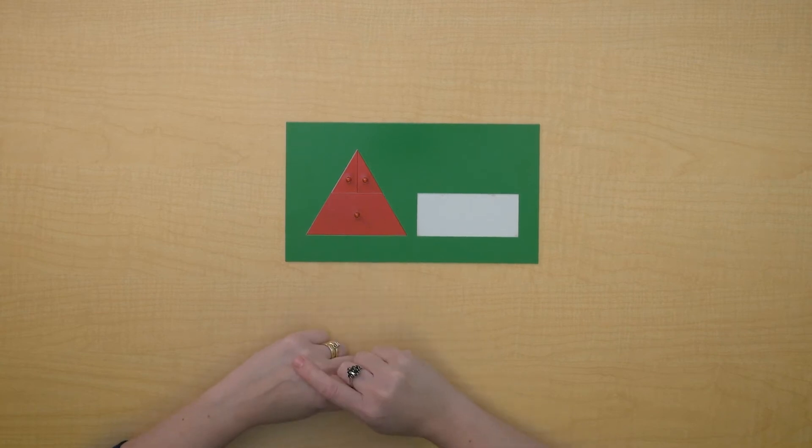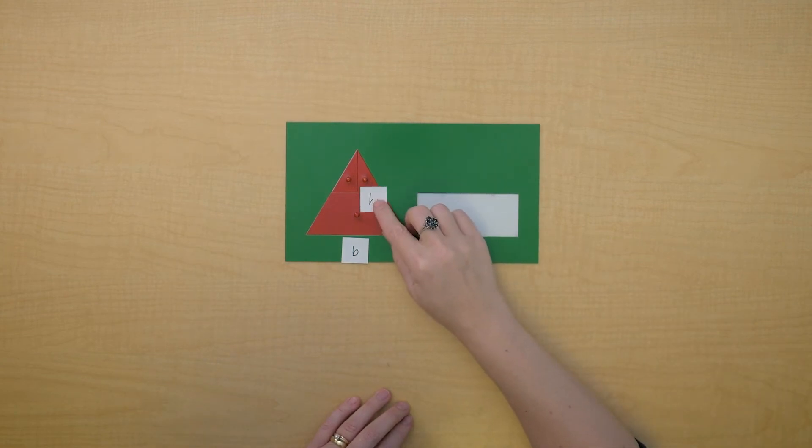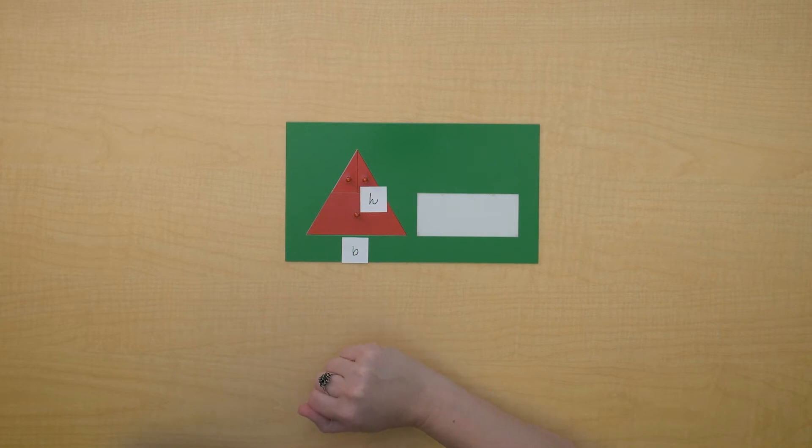So let's label our pieces like we've been doing. Let's label base and height. And we have our base and height of our triangle here and let's just see what happens when we turn that into a rectangle.